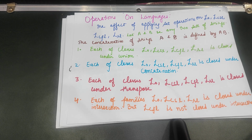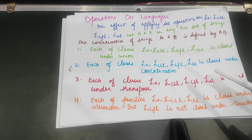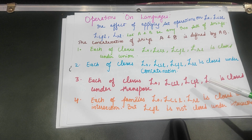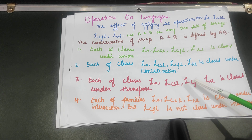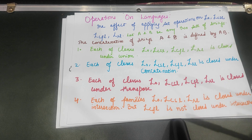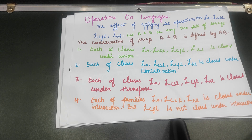The second operation is Concatenation. Concatenation means combining two elements. All four language classes — Type-0, Context-Sensitive language, Context-Free language, and Regular language — are closed under Concatenation.